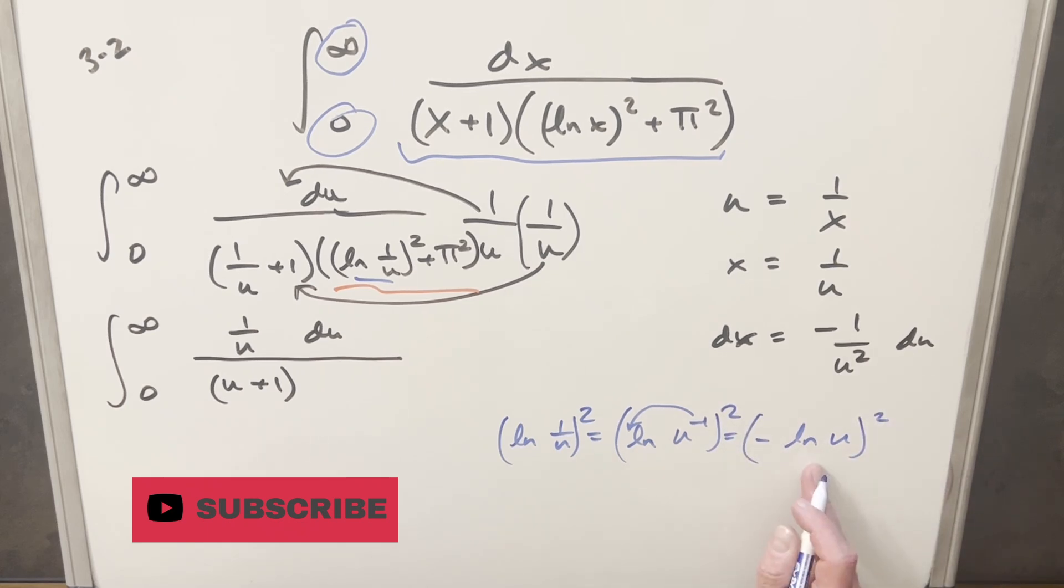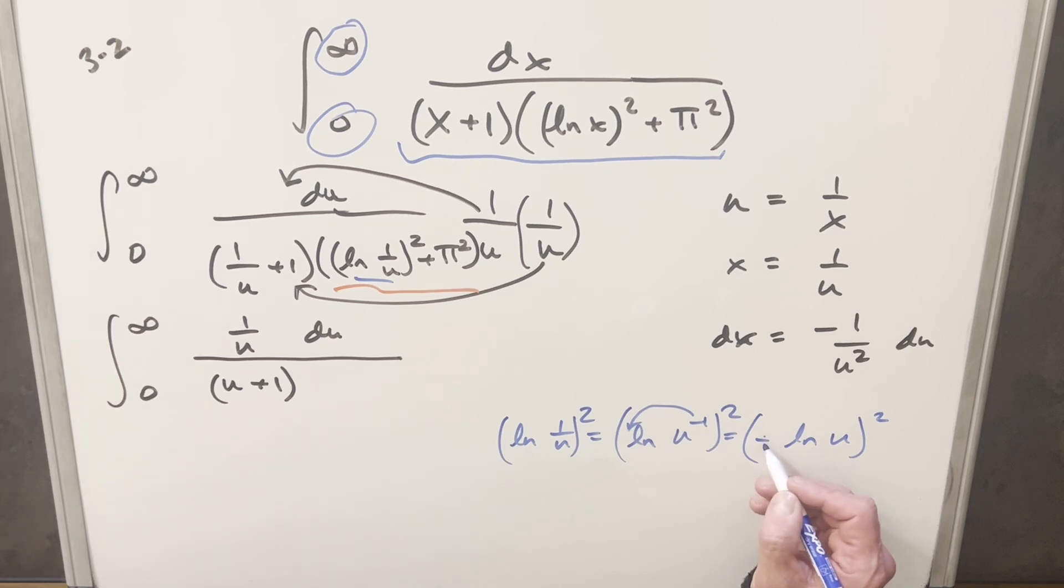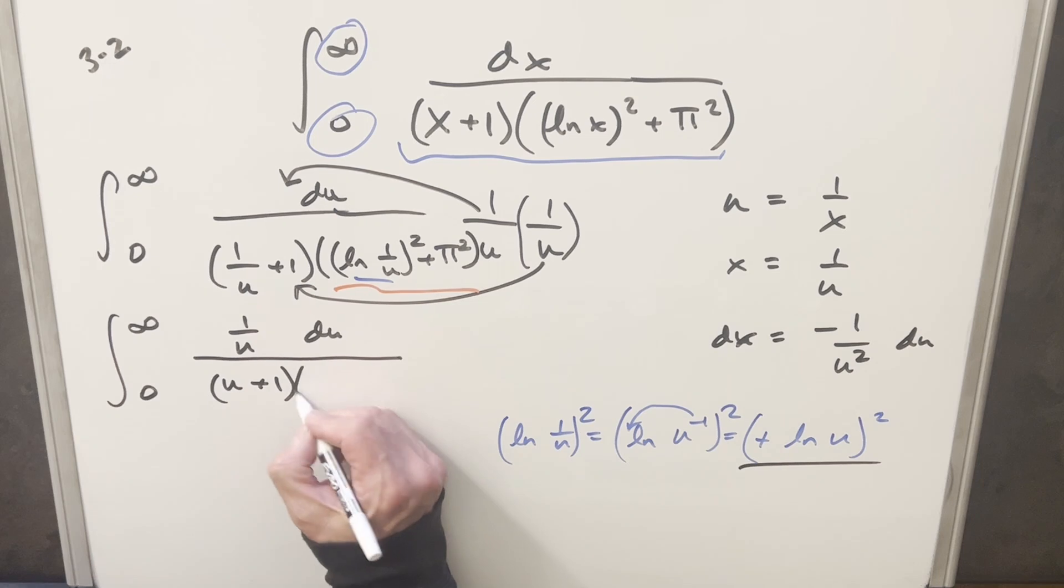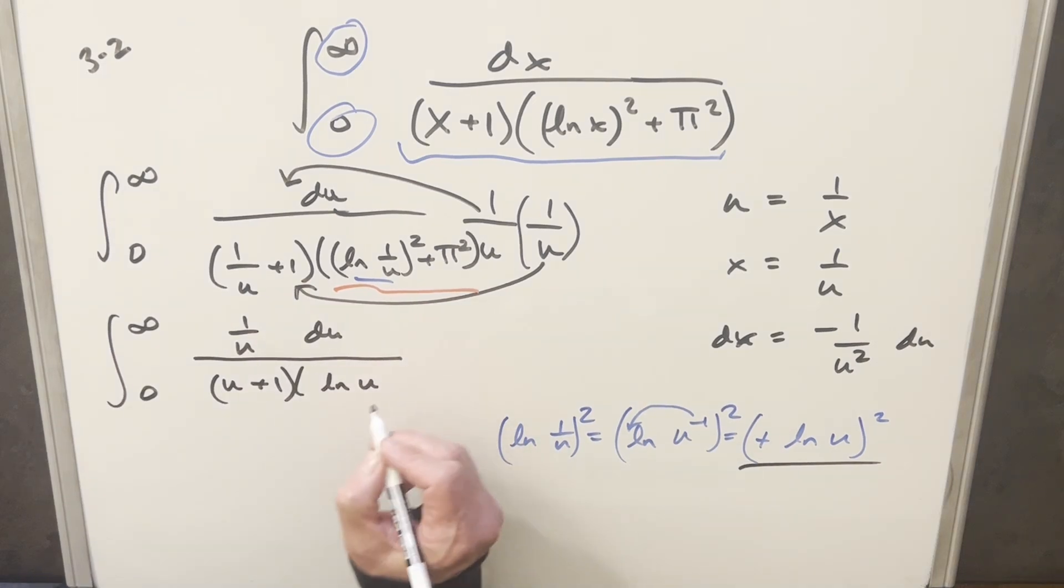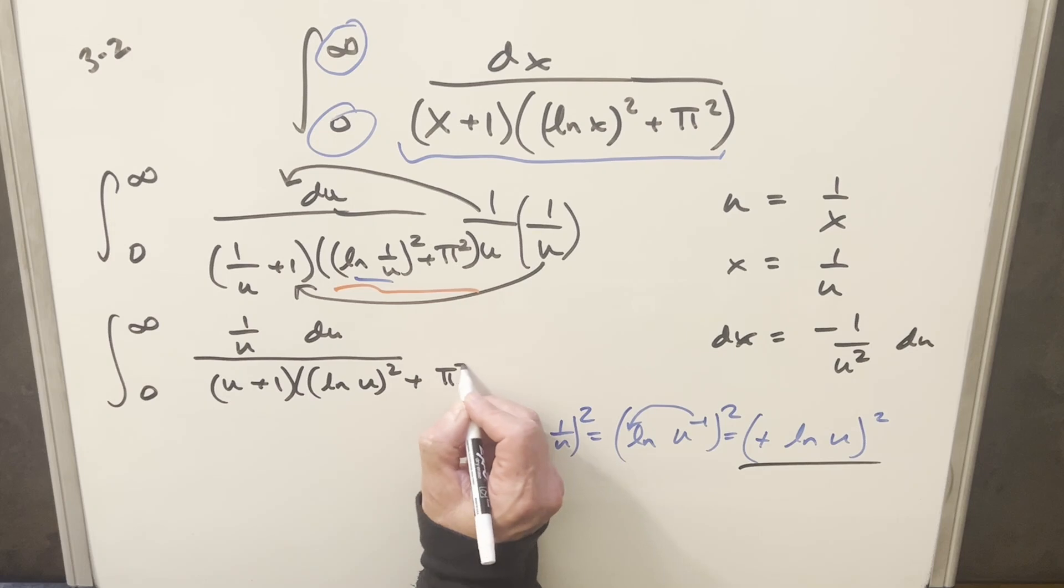what's going to happen when this is squared? Well, the minus sign just goes away, because we have minus 1 times minus 1. This will become a plus. So now I'll use this value when we rewrite over here. This is just going to become natural log of u all squared. And then we'll still have our pi squared over here.